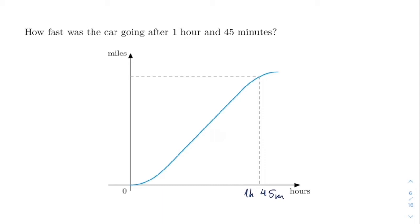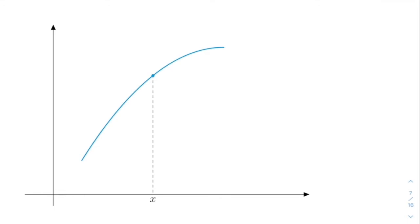We will use the average rate of change to try to compute this. So the first thing is we will try to zoom in a bit into our function. So it will look something like this. So here we have our function zoomed in. So we're trying to find here at x which remember was one hour and 45 minutes. And we want to try to find how fast were we going at exactly this moment.